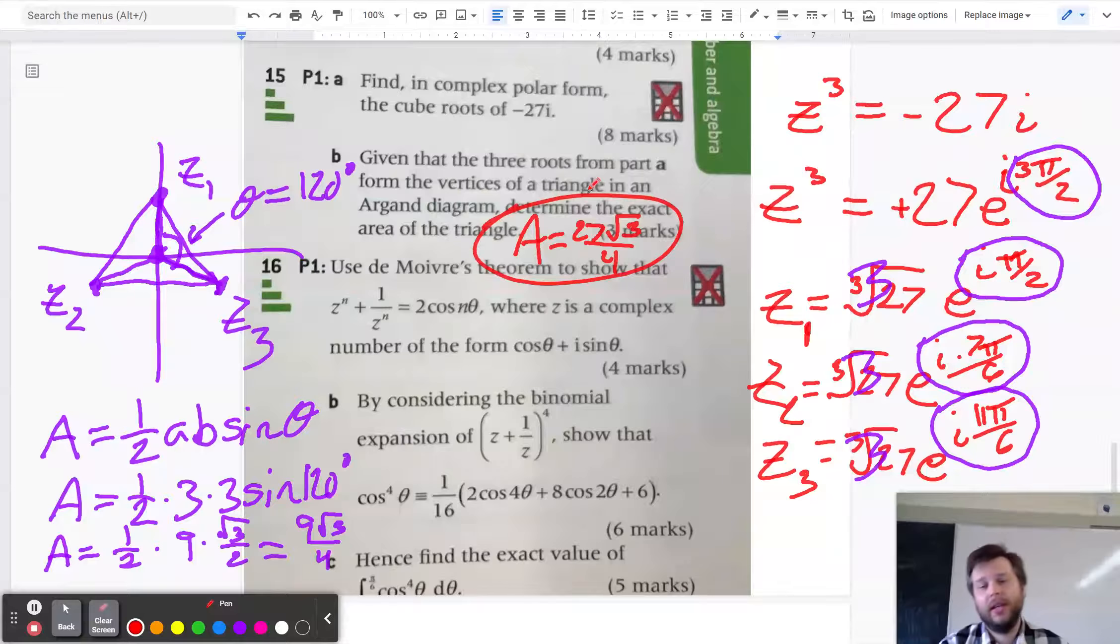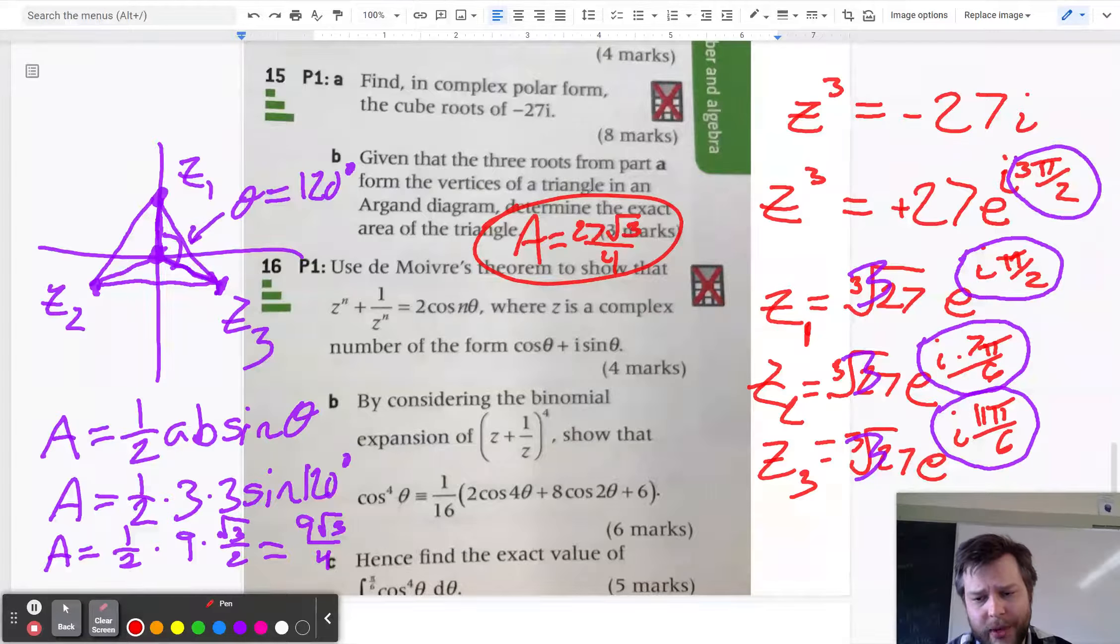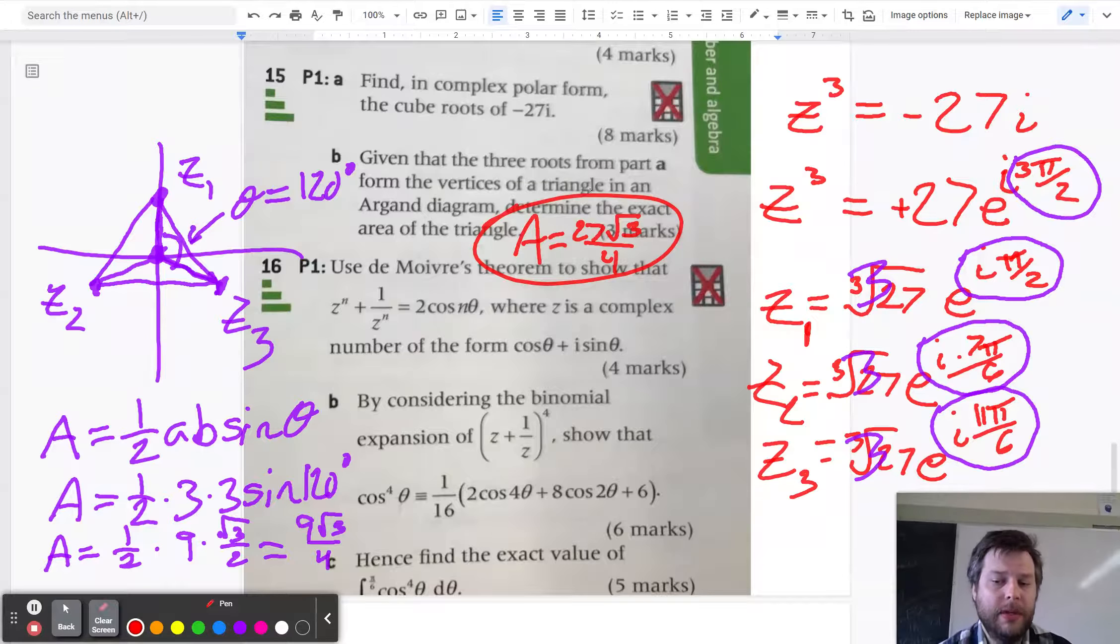And the nice thing about using that AB sine theta, 1 half AB sine theta formula for the area is that it works for any n-gon. It's not just for a triangle. Any regular polygon can be split up into a series of isosceles triangles. And because you've already found the polar form of the roots, you already know what the length of A and B are. And if you already have the polar form, it's not too hard then to find the angle as well.